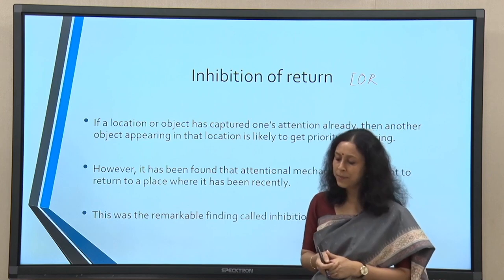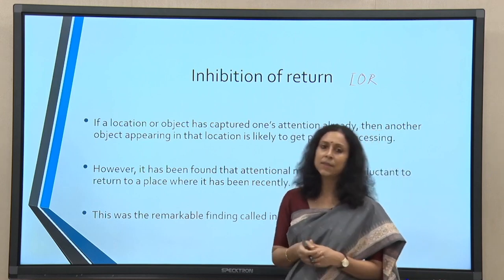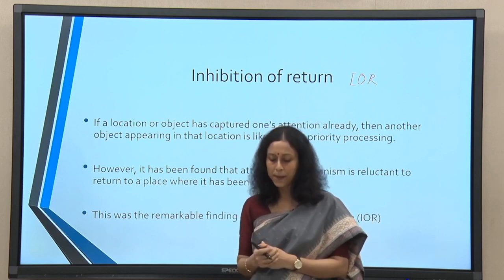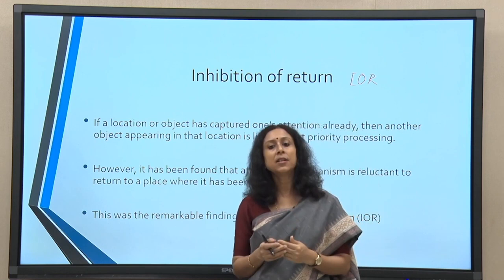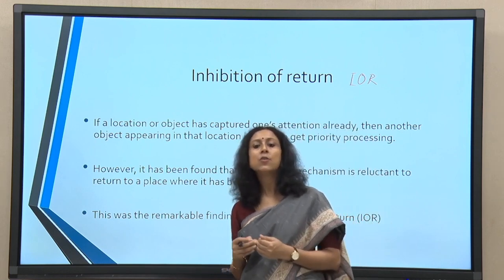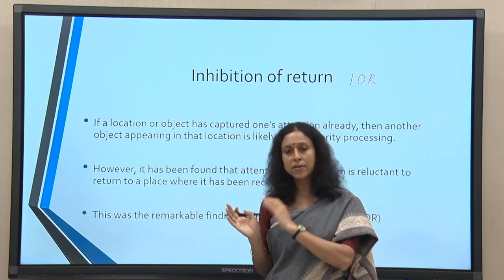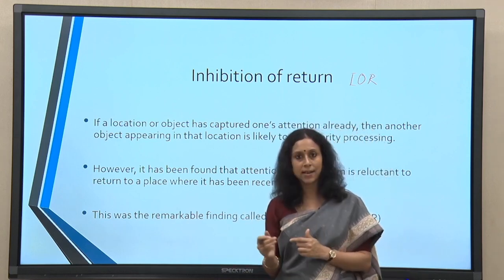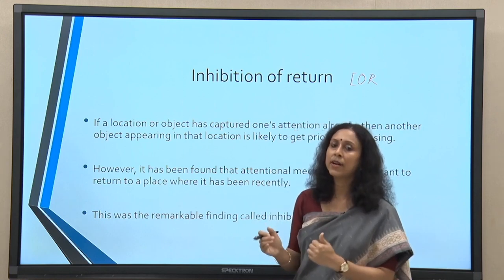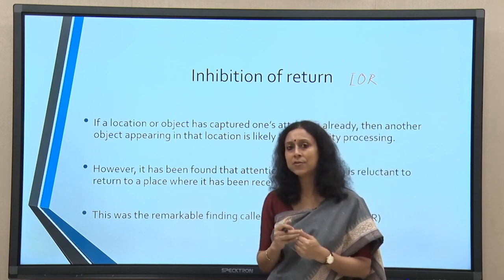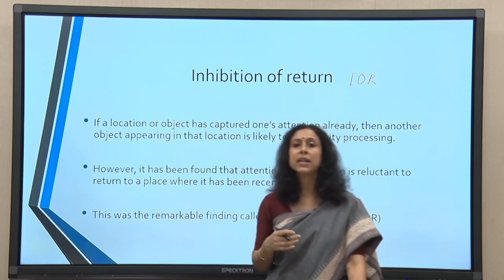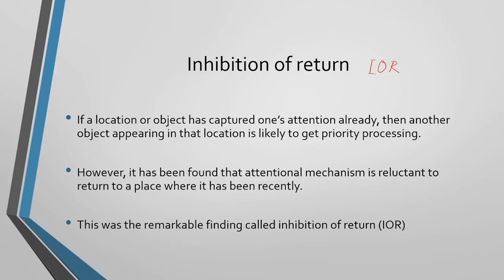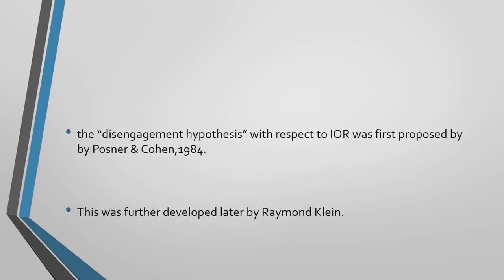Why does this happen? 300 milliseconds is a remarkably small time window. Our mental mechanism is basically geared towards optimizing — we cannot keep looking at something that has nothing to give us. If we constantly look at a particular object and do not expect anything to happen there, we cannot waste resources and ignore other probable salient features in the environment. Disengagement is as important as engagement in terms of the attentional network. The IOR effect occurs after 250 to 300 milliseconds.